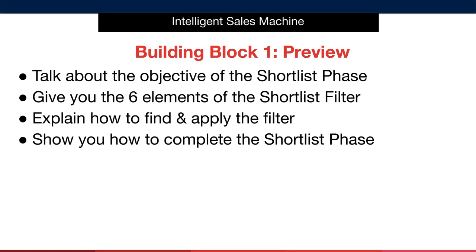Now before we move into the next module, I will give you a preview of what's coming up next. We're going to talk about the objective of the shortlist phase. I will give you the six elements of the shortlist filter and I'll explain how you find them and apply the filters. And finally I'll show you how to complete the shortlist phase in the spreadsheet.